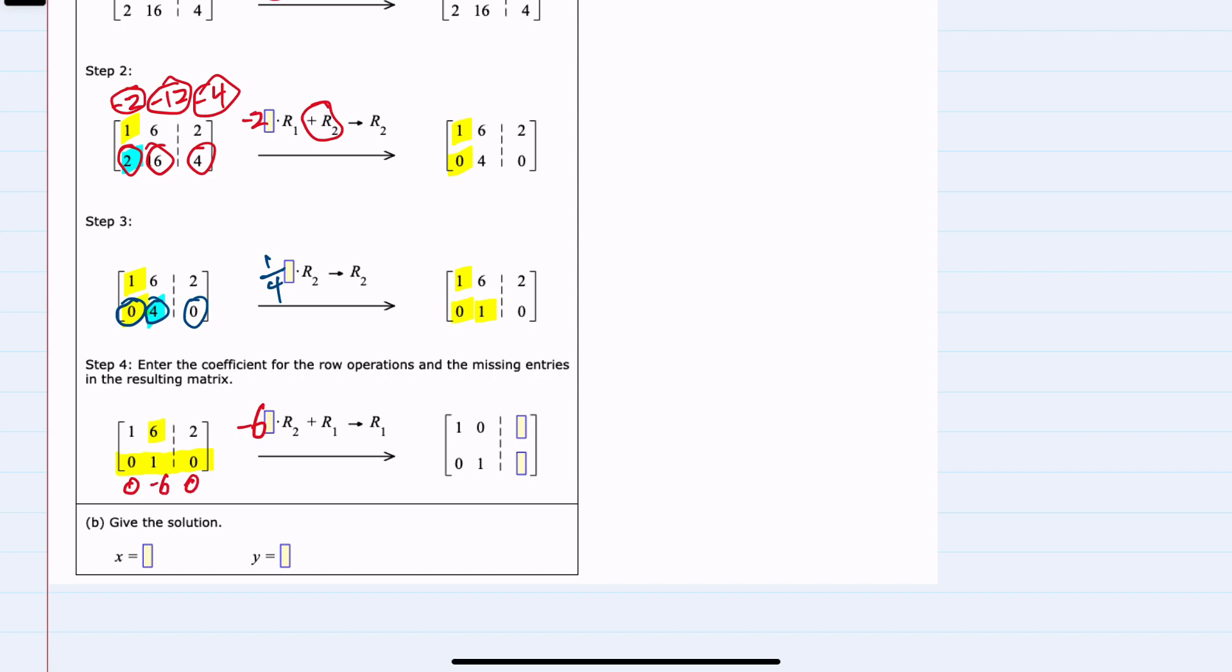So adding this row to the top gives me zero plus one is one, negative six plus six is zero, and zero plus two is two. And for that bottom row, we still have the same zero in that last spot. From here, now that we have the identity matrix on the left-hand side,